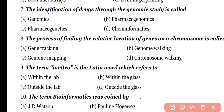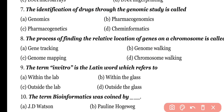Question number 7. The identification of drugs through genomic study is called: genomics, pharmacogenomics, pharmacogenetics, or cheminformatics? Correct answer is option B. Pharmacogenomics is the identification of drugs through genomic study.